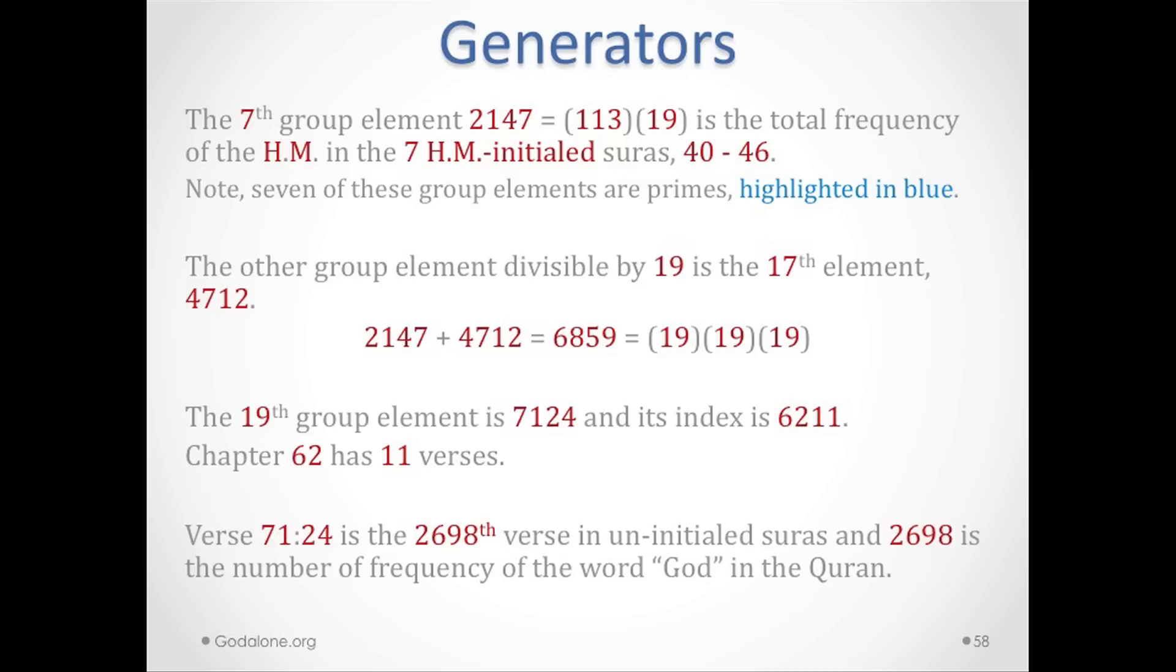The seventh group element is 2147, which is 113 times 19, the total frequency of HM or Hami in the seven HM-initial chapters in the Quran: chapters 40 through 46. That's the seventh element, 2147, which happens to be the total frequency in those seven initial chapters.